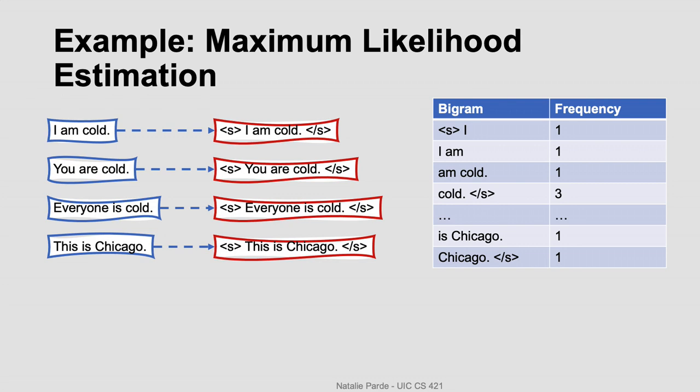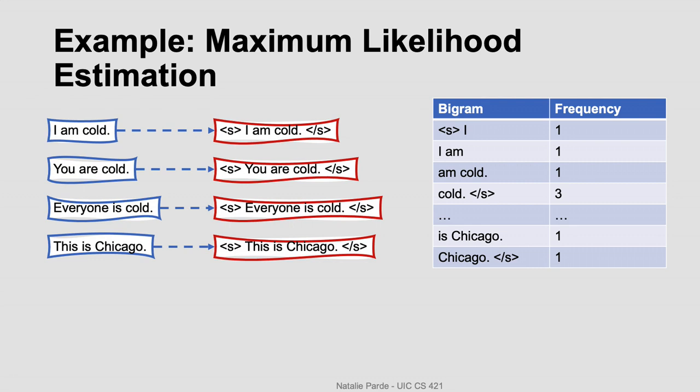Since our corpus is really small, most of these frequencies are also small, but we see that, for example, the bigram containing the word cold followed by the sentence terminator has a frequency of three. We also need to compute the frequency of every unigram in the corpus in order to do our maximum likelihood estimation. These frequencies will be a bit higher since there aren't as many variations of unigrams as there are of bigrams.